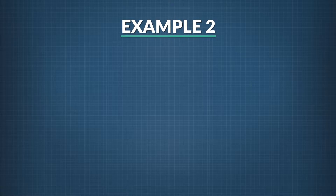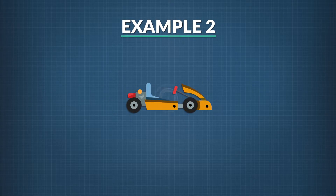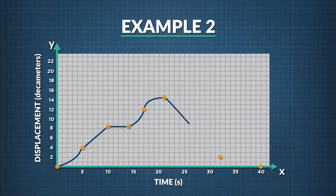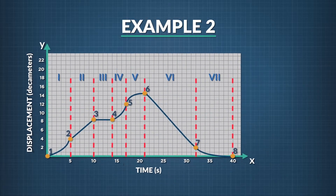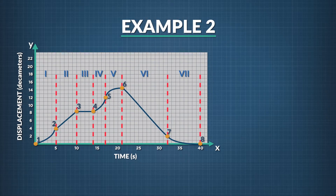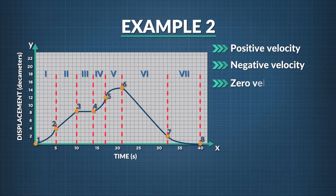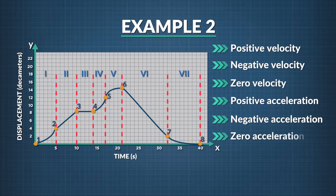Now let's look at another example. You hop into a go-cart and, before driving off, strap a sensor on the cart that records your position every 1 tenth of a second. After finishing your ride, the sensor displays the collected data. In this curve, we can mark out 7 distinct regions with dotted lines and Roman numerals. For each of the 7 regions, we want to know which ones show positive velocity, negative velocity, zero velocity, positive acceleration, negative acceleration, and zero acceleration.